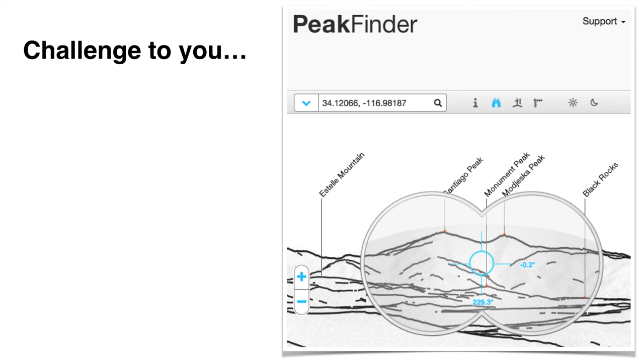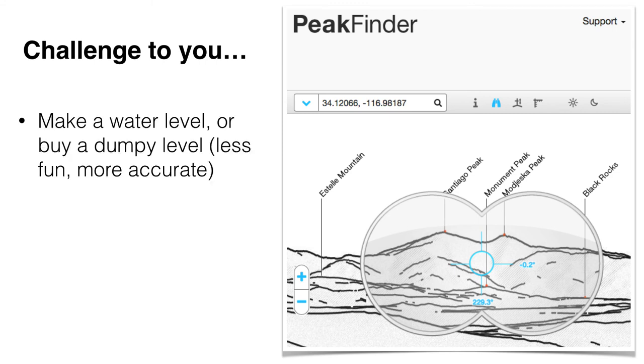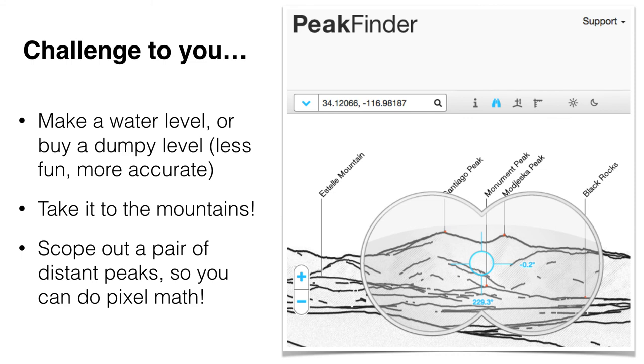So here's a challenge to you. Why don't you make yourself a water level? It's kind of a fun project. And there's lots of different ways of doing it. I've seen people make water levels of nothing but hose. Like, there was no two liter bottle in the end. It was just hose. And it's a little bit more difficult to manage. But it's a little fun project. Make yourself a water level or get yourself a dumpy level, either buy it or rent it, which is a lot more accurate. It's a technical piece of intro gear, but less fun. So take that piece of gear into the mountains and scope out a pair of mountain peaks and do your own pixel math and see what you can discover.